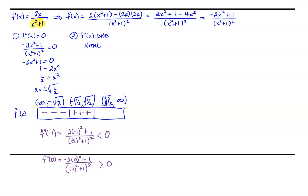Choosing a representative value in our third interval, let's choose 1. We have negative 2 times 1 squared plus 1, all over the quantity 1 squared plus 1, all squared. Again, my denominator will always be positive. My numerator is negative 2 plus 1; negative 2 is greater in magnitude, making this sum a negative value. So our second derivative is negative on that third interval.